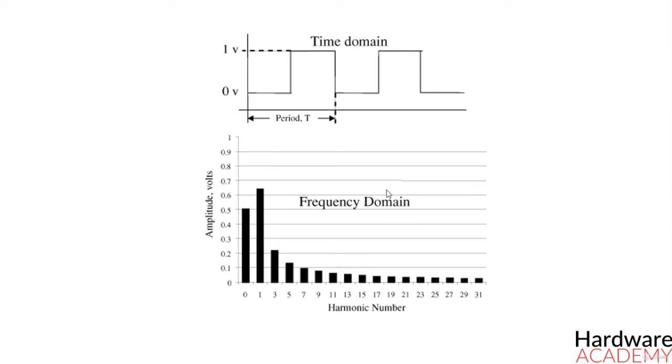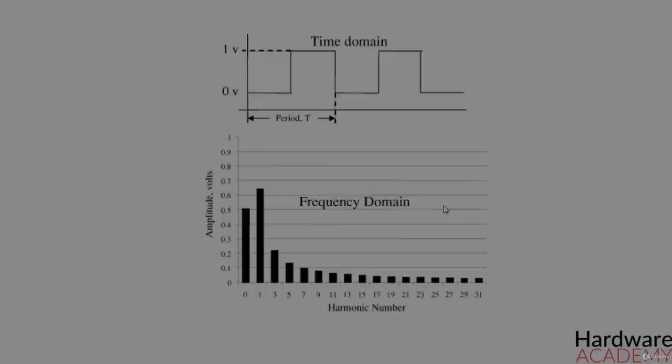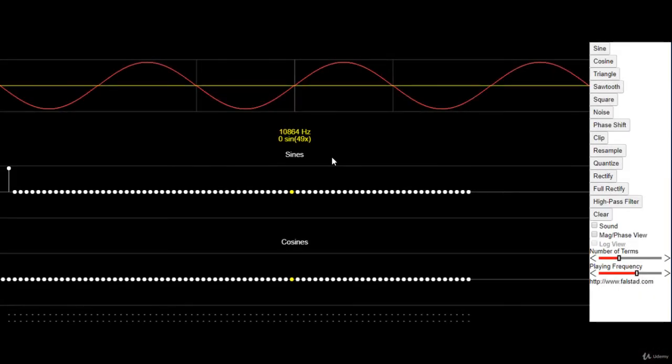In order to understand Fourier series better let's try to visualize the signal in frequency domain in our simulator. Alright, here we are. This is our signal which is a pure sine wave and below that we have its sine and cosine components.